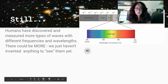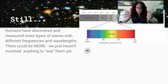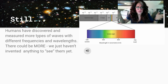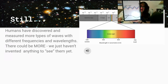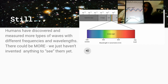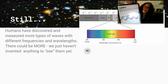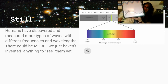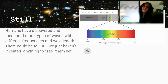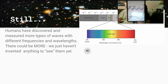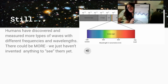We've discovered over time that there are more waves outside the spectrum of visible light. On the top end we've got gamma rays, and on the bottom end we've got radio waves. But for all we know, there could be waves with even more energy, higher frequency, and shorter wavelength than gamma rays, and ones with less energy, lower frequency, and longer wavelength than radio waves. We just haven't detected them yet.